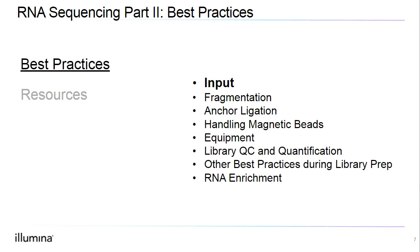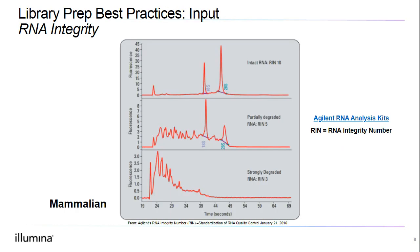Let's start with input best practices. When working with RNA, we want to evaluate RNA integrity or RNA quality, as this has a major impact on library prep performance. It will also determine which library prep kits can be used with your sample. We measure RNA integrity in terms of RIN, which stands for RNA Integrity Number. You may also hear the similar term RQN, or RNA Quality Number, which is used with a fragment analyzer. These numbers give us an idea of the quality of our RNA and how intact it is, based on the entire electrophoretic trace, including the 18S to 28S ribosomal peak ratio.